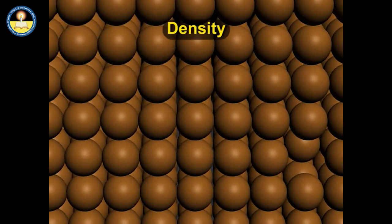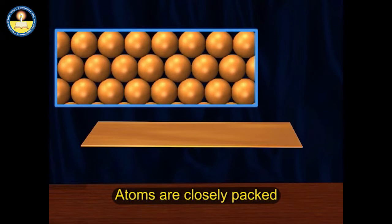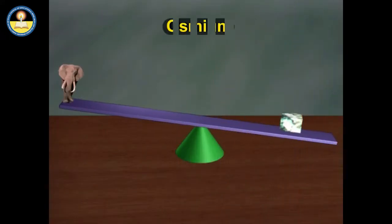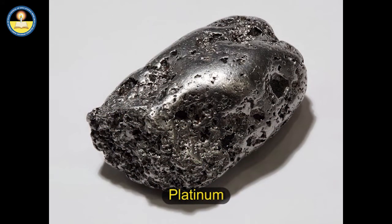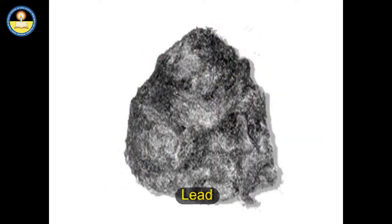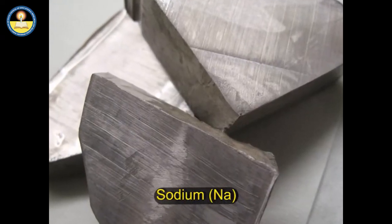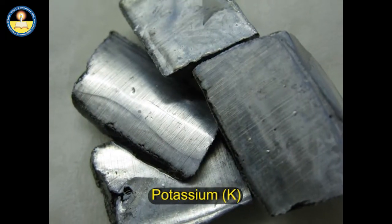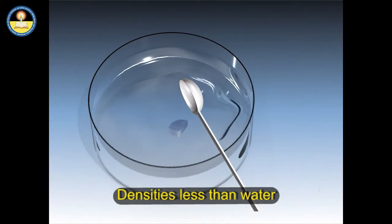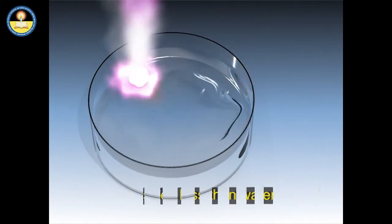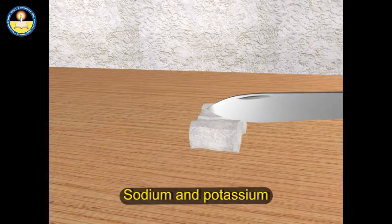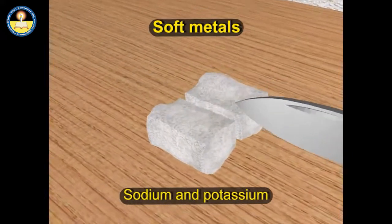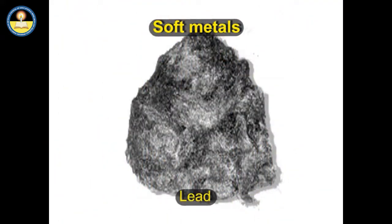The density of metals is high because in metals, atoms are closely packed. Osmium is the densest metal. Platinum, gold, and lead have high densities. Only sodium (Na) and potassium (K) have densities less than water. Thus, all metals are hard materials, except sodium and potassium, which are soft metals. Lead is also considered to be a soft metal.